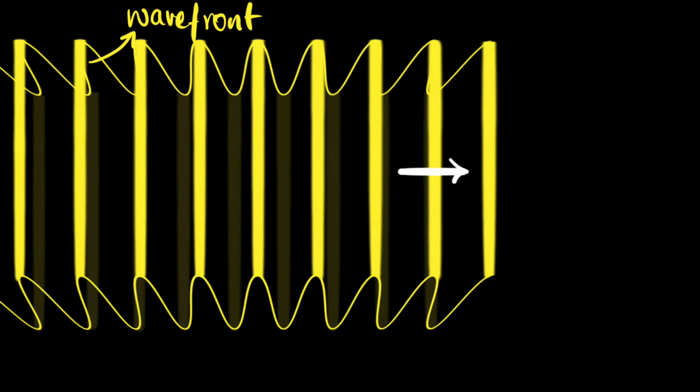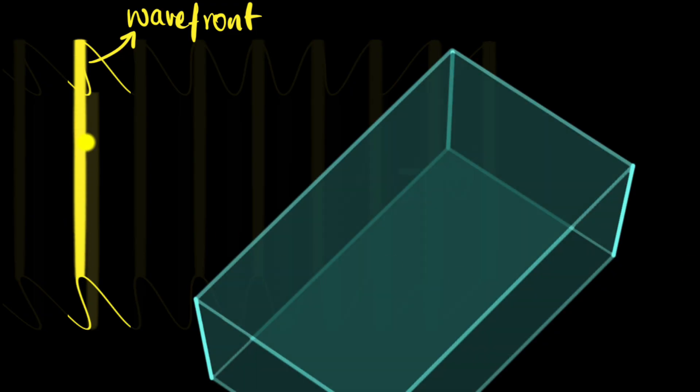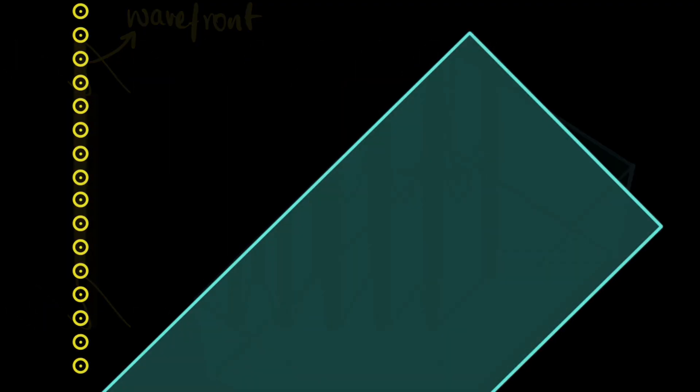To understand what happens when light enters a medium like glass, let's focus on one wavefront and introduce our glass piece. Instead of a continuous wavefront, let's convert it into a few dots representing the wave crests. In the next frame, all of them travel equal distance forward since they're all traveling at the same speed. But now the crest at the bottom enters the glass piece first, so it slows down first. In the next frame, this one travels less distance but the ones above travel the same distance as before.